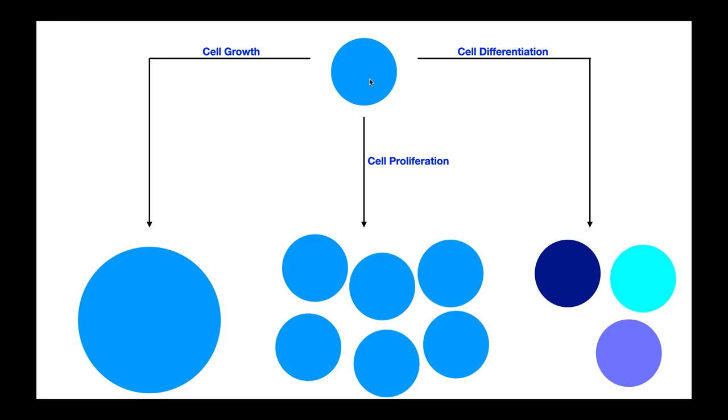For example, macrophages, when they move to bone tissue, they differentiate into osteoclasts. And if you know about osteoclasts, they're responsible for resorbing bone, breaking bone down. And there's lots of examples of that with different cell types.